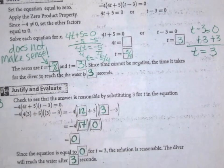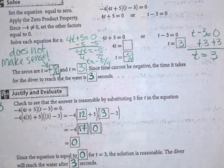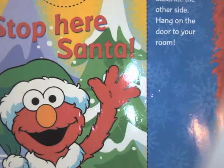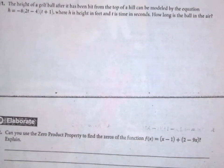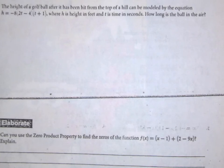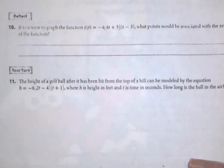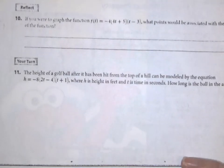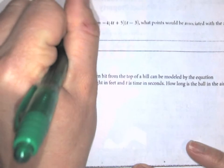If you were to graph the function, what points would be associated with the zeros? If you remember, the zeros are the same as the x-intercepts. So my x-intercepts would be -5/4 and 3. We found those when we found our zeros.